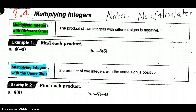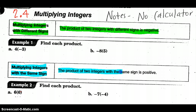Here's what you need to remember: if they have different signs, the product of two integers with different signs will always be negative. The product of integers with the same sign will always be positive.